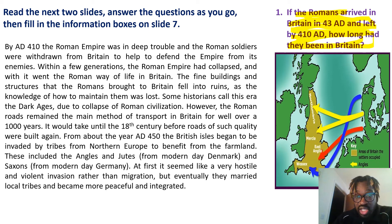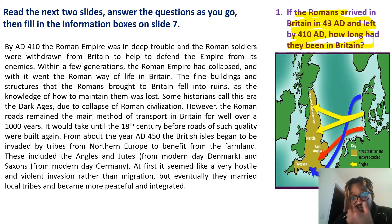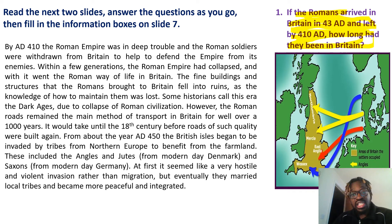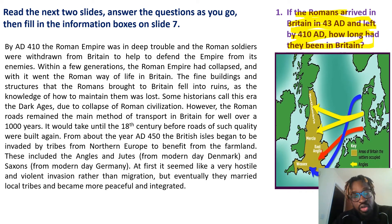You'll see on the map to the right, it shows the invasion of different groups. The red line represents the Saxons, the blue line represents the Jutes, and the yellow represents the Angles. It shows the migration patterns from Europe of different groups who came to settle in England after the Romans.